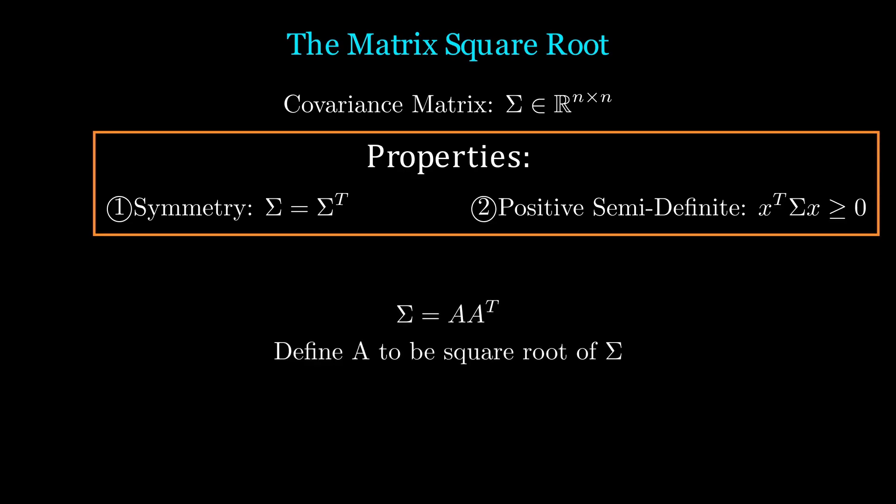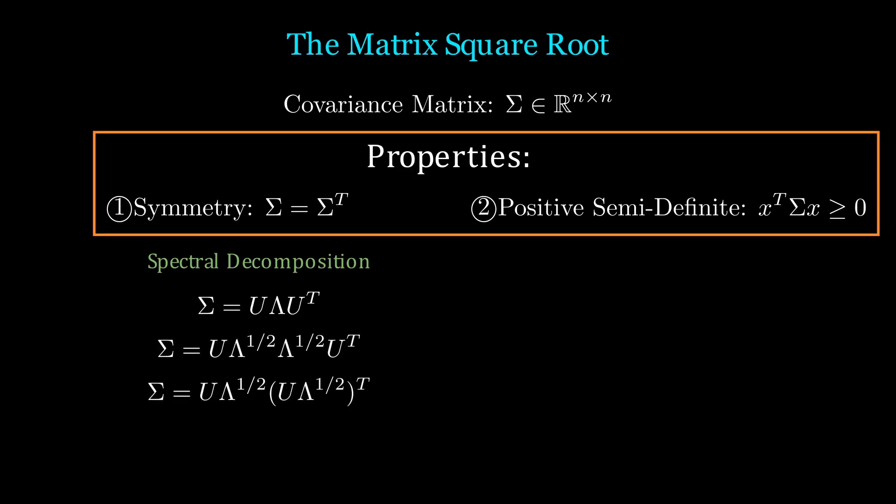If sigma equals AA transpose, then A is the square root of sigma. Given these properties, the eigenvalue decomposition becomes a spectral decomposition. So we can decompose sigma in the following way. Performing some basic manipulations, we can see that the square root is U times the square root of lambda. Note that since lambda is diagonal, lambda equals lambda transpose.